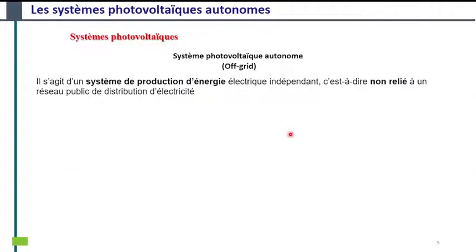On commence principalement par les systèmes photovoltaïques autonomes. C'est un système indépendant et non relié à un réseau public de distribution d'électricité.